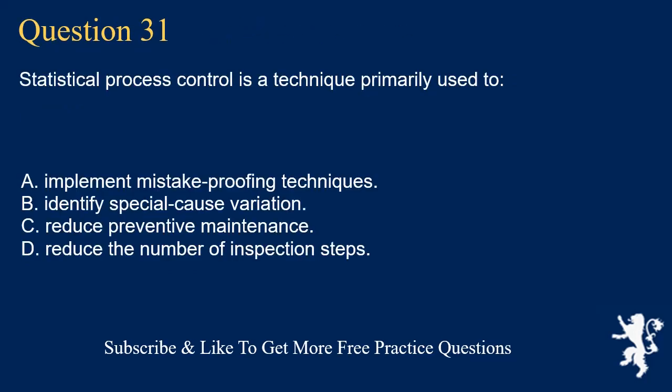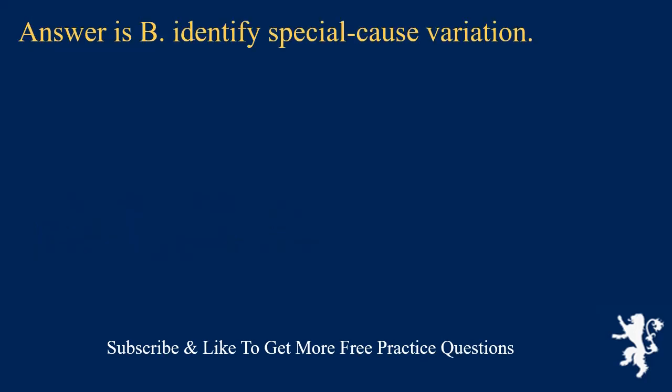Question 31. Statistical process control is a technique primarily used to: A. Implement mistake proofing techniques. B. Identify special cause variation. C. Reduce preventive maintenance. D. Reduce the number of inspection steps. Answer is B. Identify special cause variation.